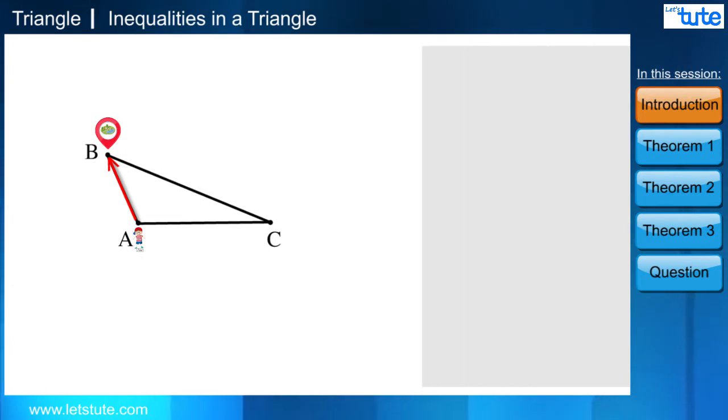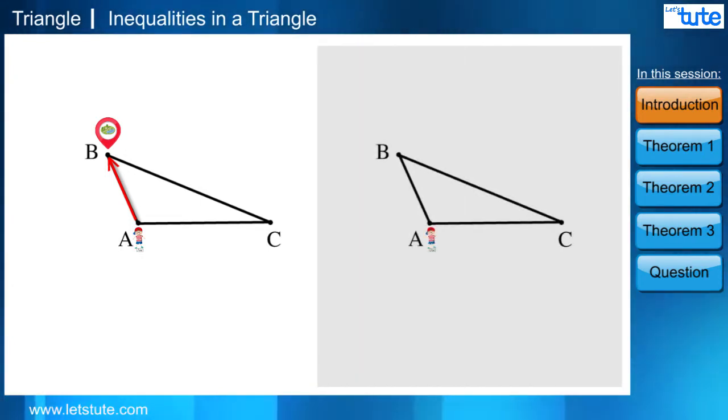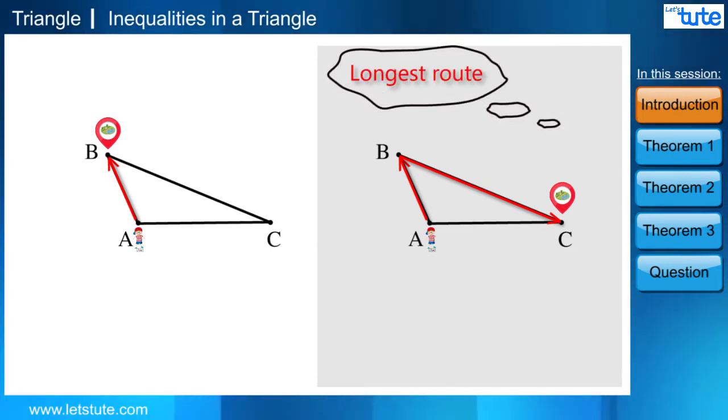Let's take another situation. If the park is at point C, then what would be the shortest route for him? Yes, it would be from point A to C as going from A to B and B to C would be the longest route for him, isn't it?